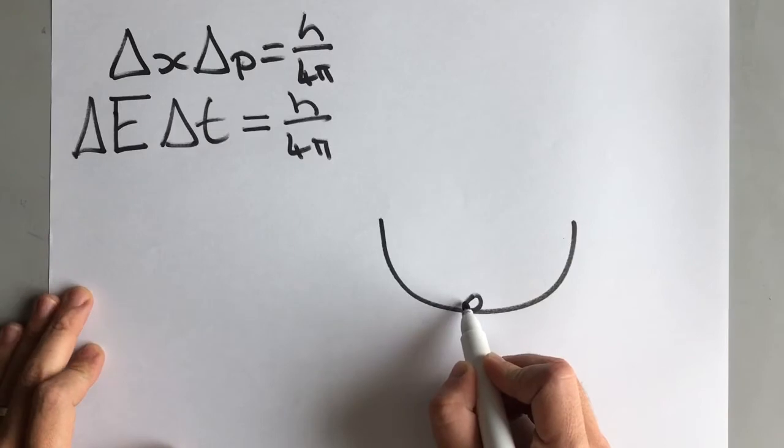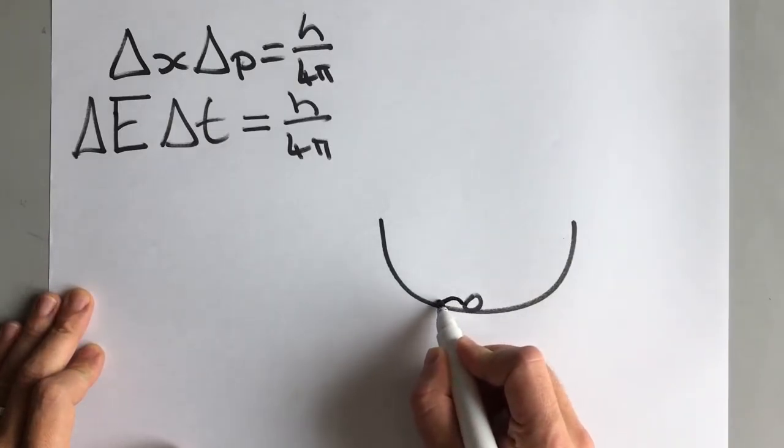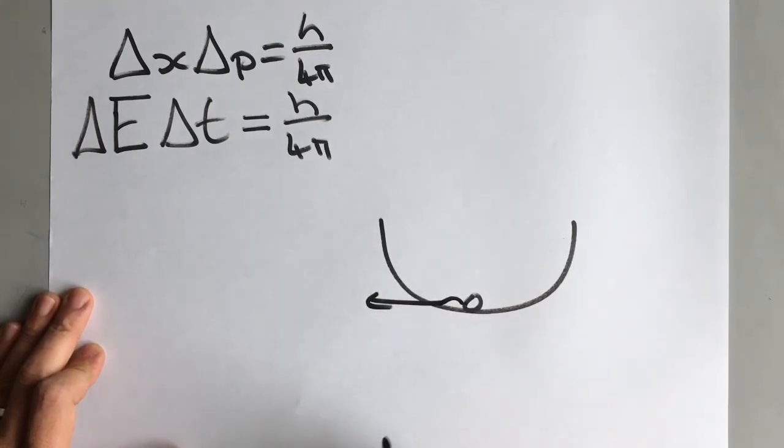Now this borrowing of energy is called quantum tunneling because we can visualize the electron or the particle, whatever it is, tunneling through the sides of the bowl.